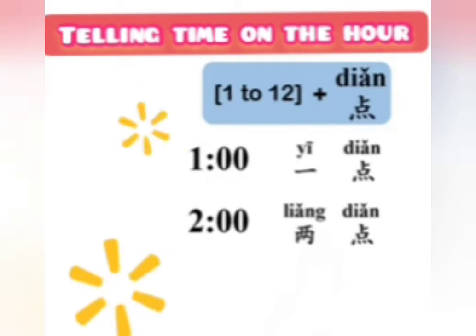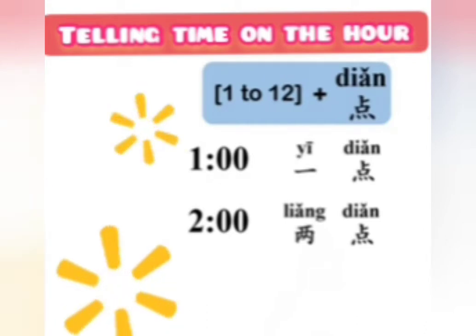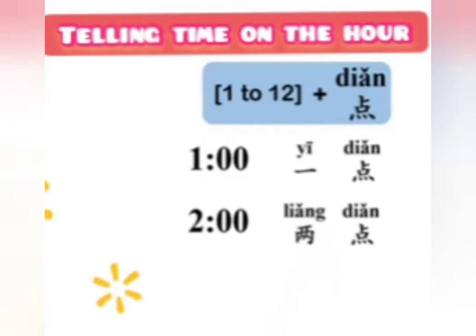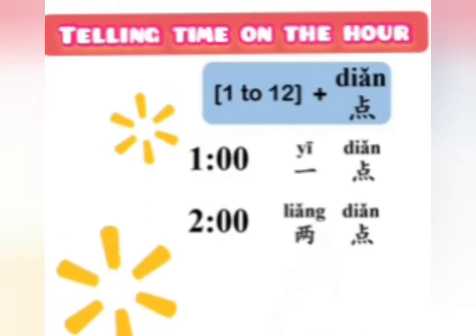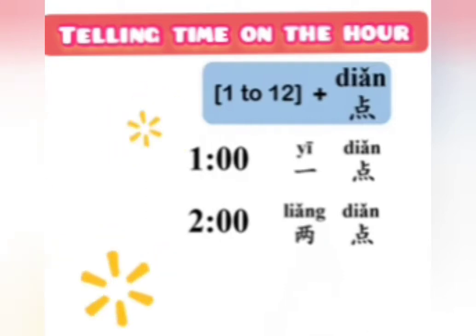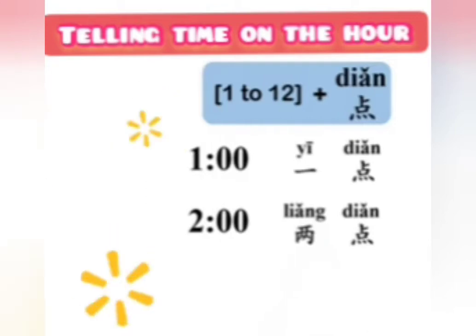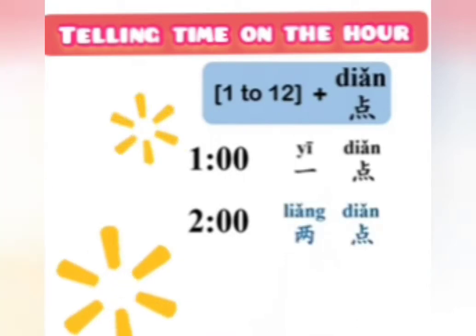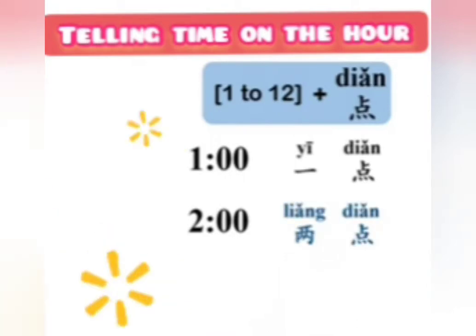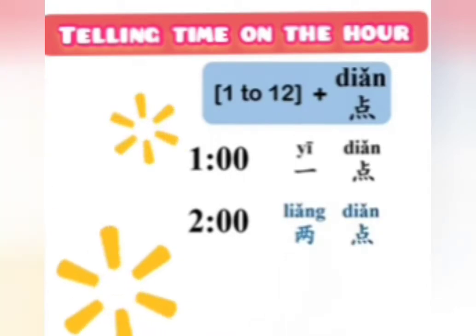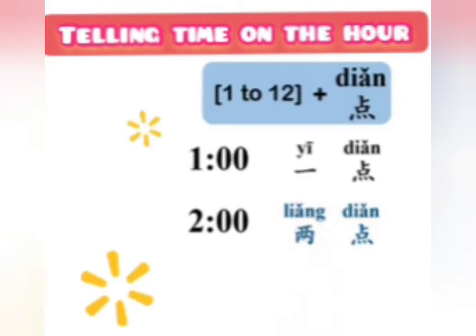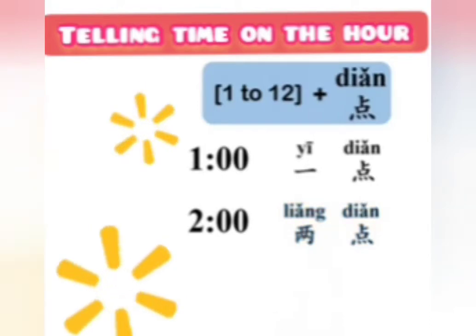For now, you just need to remember that when telling time, if it's two o'clock, you should say 两点 instead of 二点. Please repeat after me: 两点, 两点, 两点 — two o'clock.